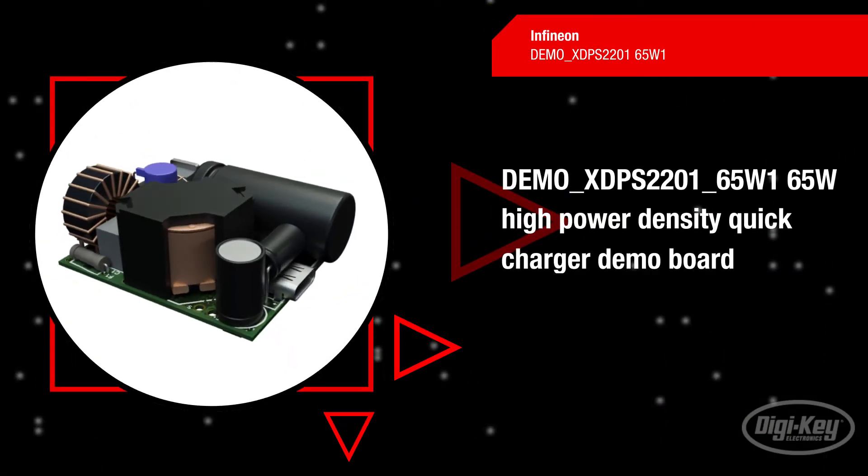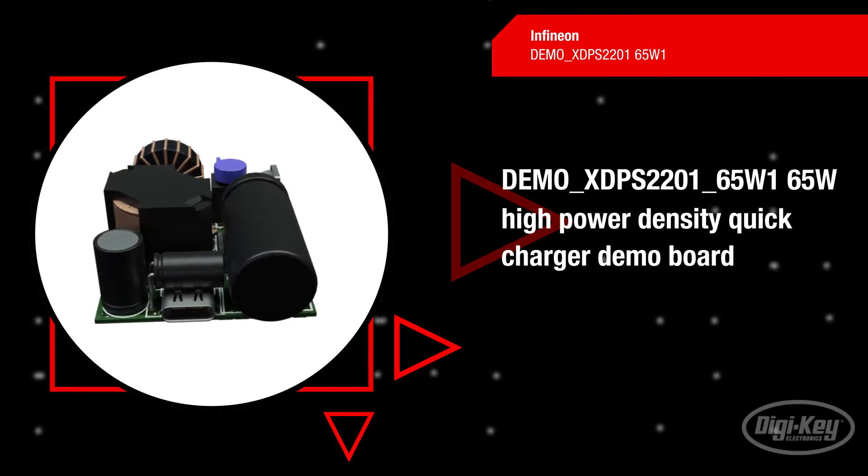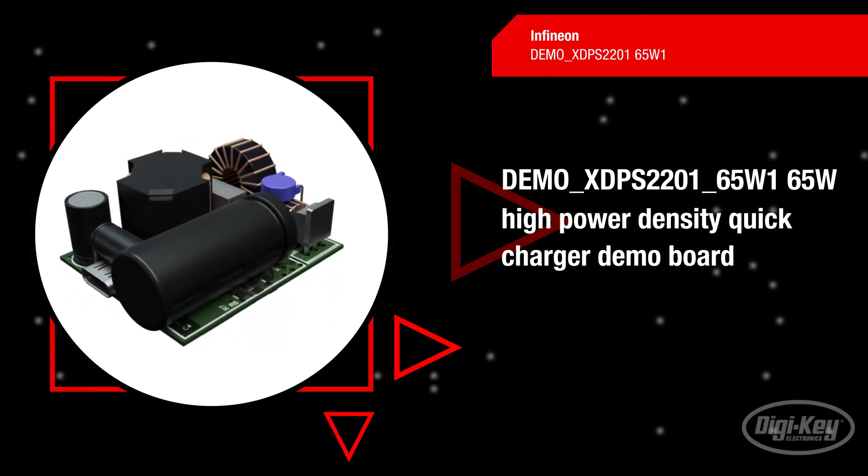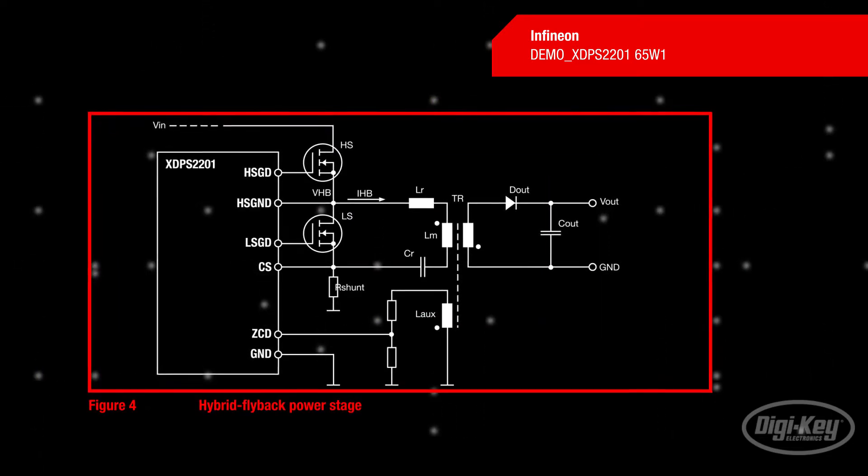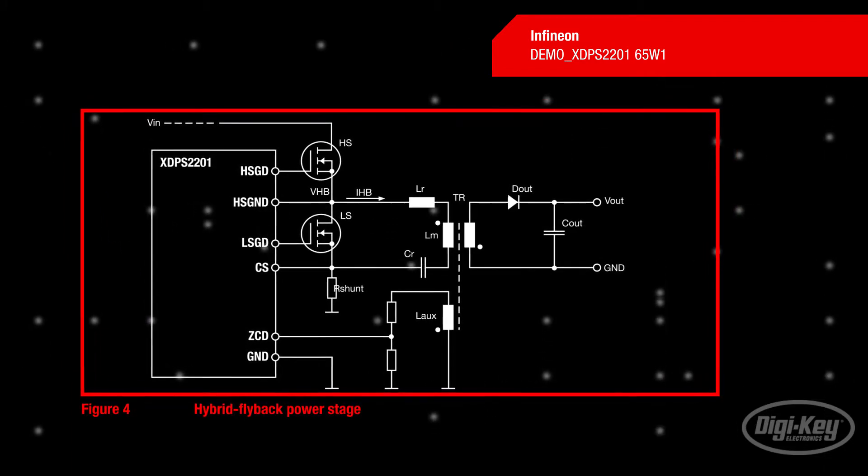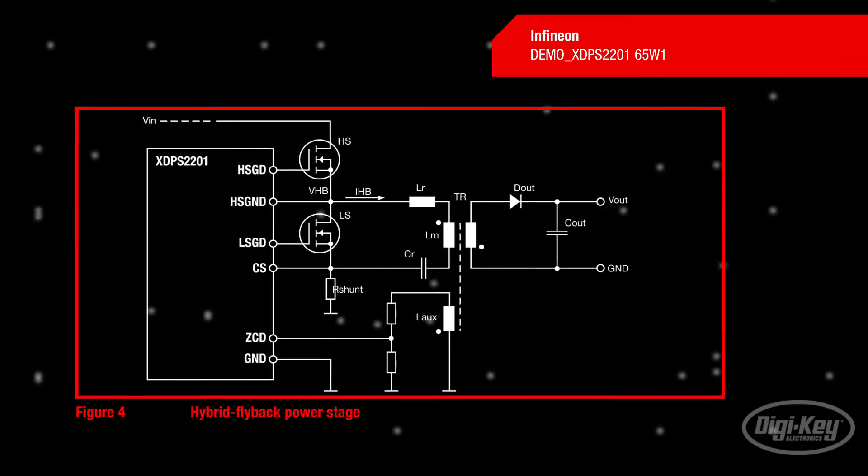Infineon's demo XDPS2201-65W1 is a 65W USB Power Delivery Type-C Programmable Power Supply Charger Demo Board. This board leverages the Infineon XDPS2201 multimode digitally configurable hybrid flyback controller with two CoolMOS superjunction MOSFETs in a half-bridge configuration.